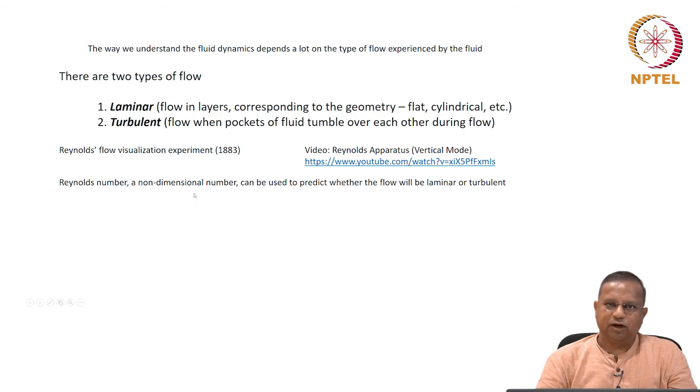There is a non-dimensional number. We have already seen use of non-dimensional numbers to generalize some solutions. Here this is in a different context. A non-dimensional number called the Reynolds number can be used to predict whether the flow will be laminar or turbulent.